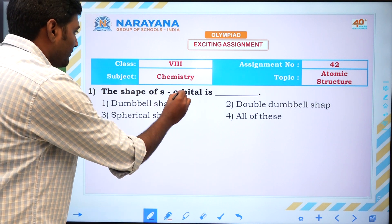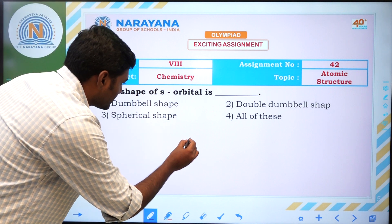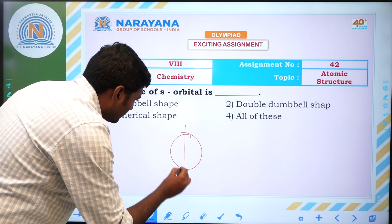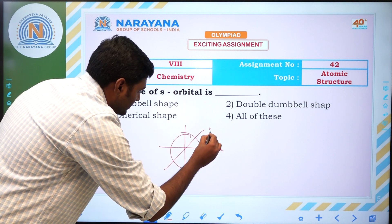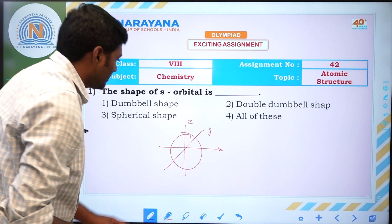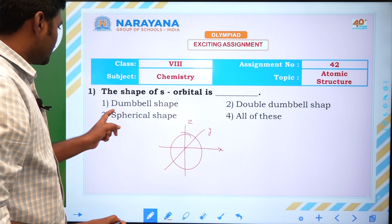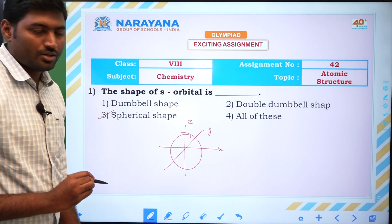First one, the shape of S orbital. S orbital shape is a spherical structure where it is like this. S orbital shape is spherical shape. Answer is third one.